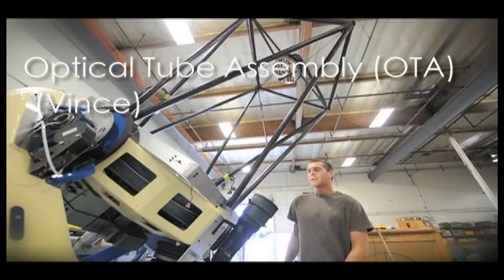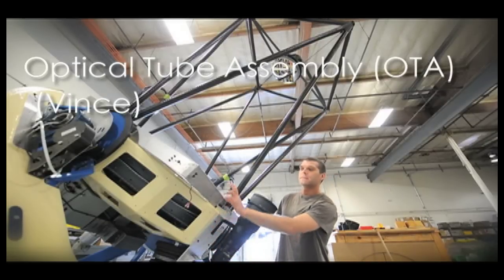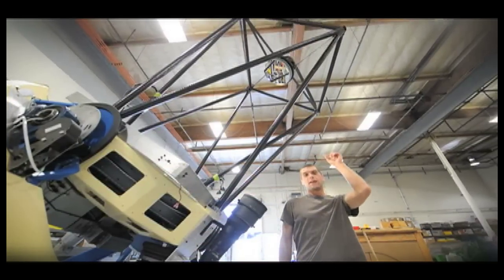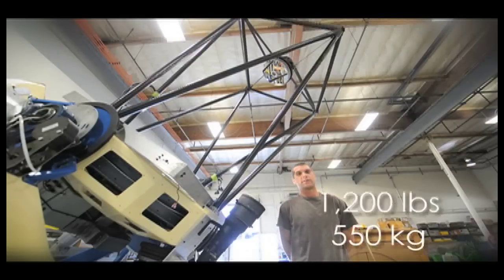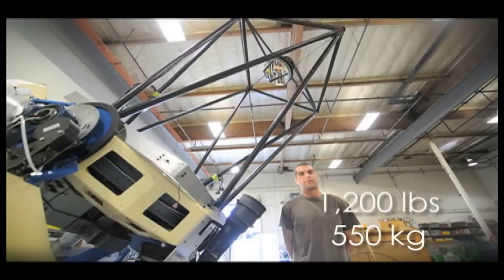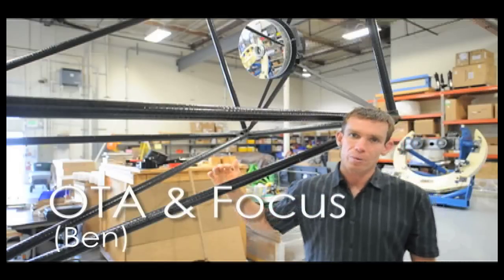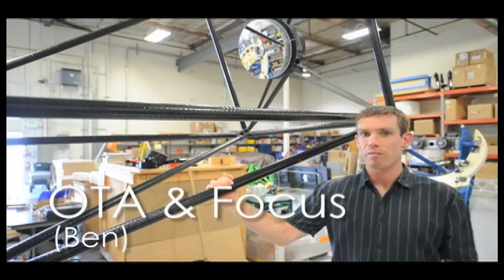This is our one meter OTA. It consists of an instrument, mirror cell, mirror cover, trusses, secondary, and focus mechanism. It weighs about 1200 pounds, about 550 kilos. For the OTA, we use carbon fiber trusses for stiffness to weight ratio.